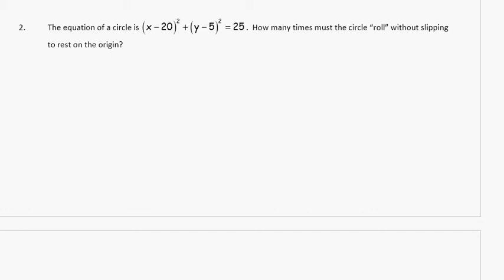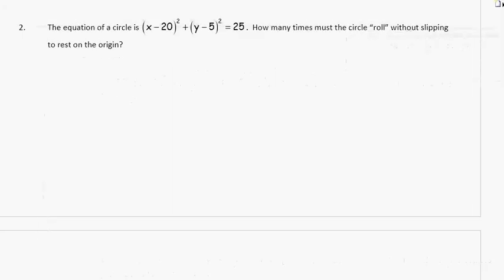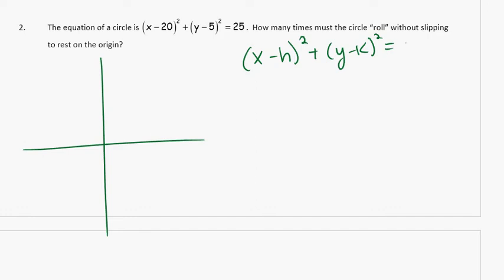The equation of a circle is given. We have the equation of a circle, and we know that the standard form for the equation of a circle is (x - h)² + (y - k)² = r². In this case, 20 represents h, 5 represents k, and 25 represents r².